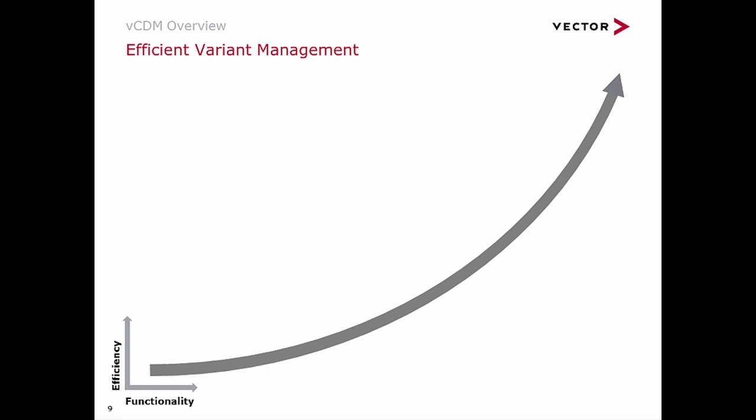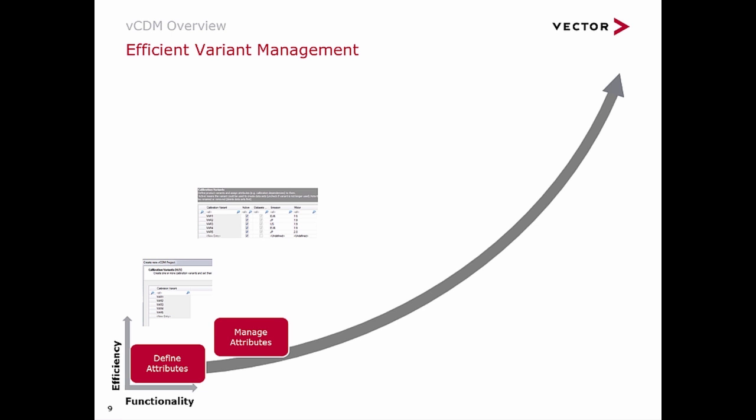Efficient variant management is one of VCDM's core strengths. Attributes can be defined and assigned to every object in the database — projects, datasets, components, and so on. Attributes provide intelligence on the associated object, for instance the displacement of an engine, the emission class of a component, or the configuration of a vehicle. Attributes can be used to structure calibration projects and provide useful information in the user interface, and their primary purpose is for automated variant management.